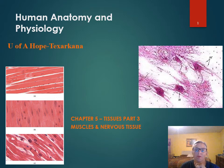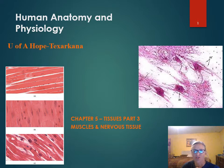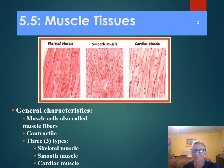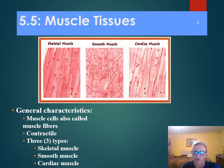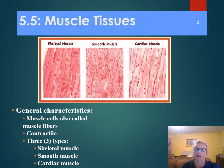This last section is going to be a little bit shorter. We're going to look at the three types of muscles and at nervous tissue. The three types of muscle tissue are skeletal, smooth, and cardiac. Muscle tissue is interesting because it has the ability to contract — it shortens and thickens. As it contracts, it's going to move the body parts.